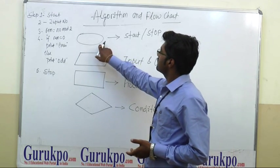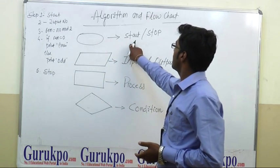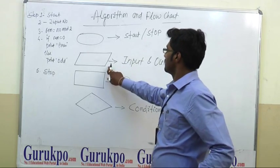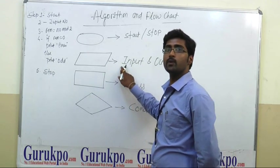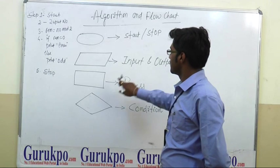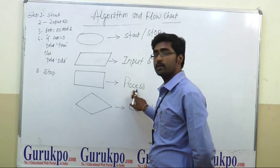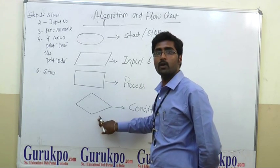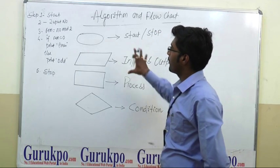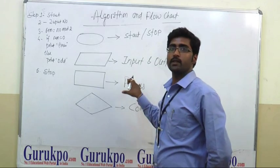This is the ellipse symbol — it is used for start and stop. This symbol is used for input and output. This is the rectangle symbol and it is used for process. And this diamond box is used for a condition. These are the basic symbols of a flowchart.